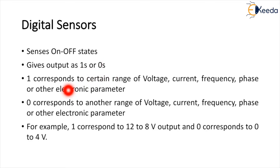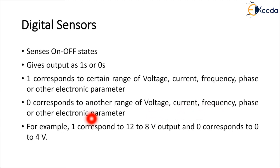One corresponds to a certain range of voltage, current, frequency, phase, or other electrical parameters, giving a high output — high means one. Zero corresponds to another range of voltage, current, frequency, phase, or other electrical parameters. For example, one corresponds to a 12 to 8 volt output and zero corresponds to 0 to 4 volt output.